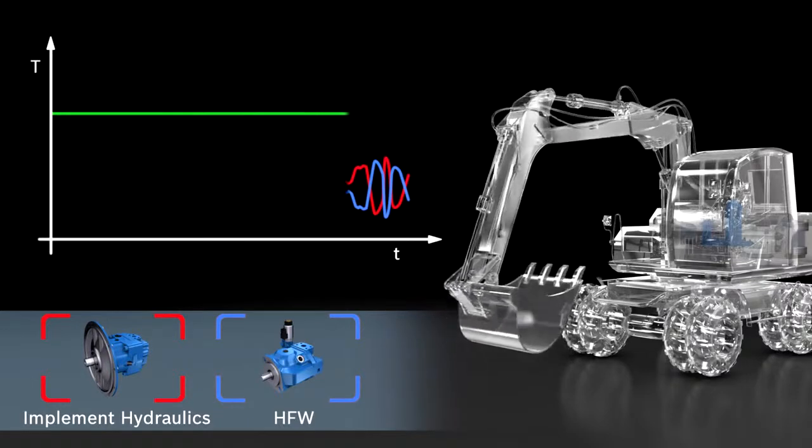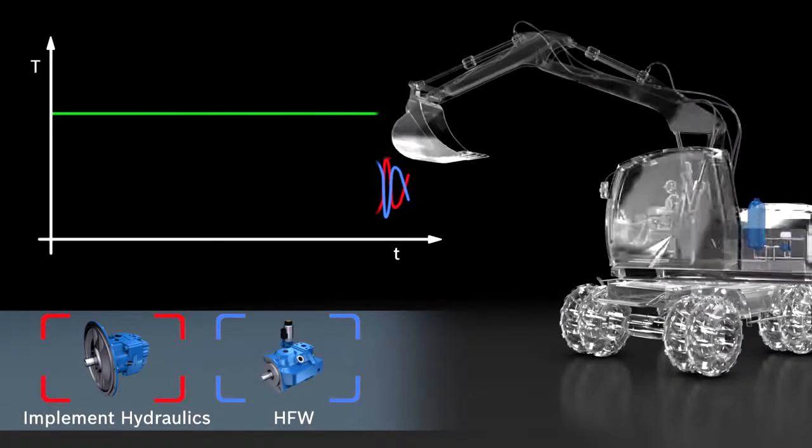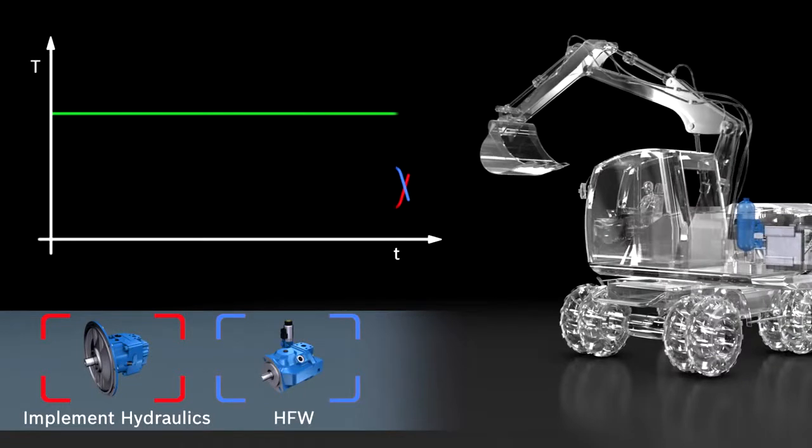The hydraulic flywheel thus evens out the power required from the combustion engine and keeps it ideally constant.